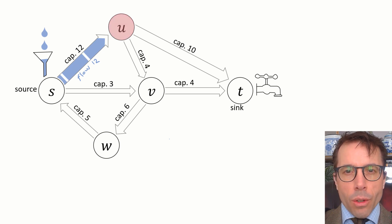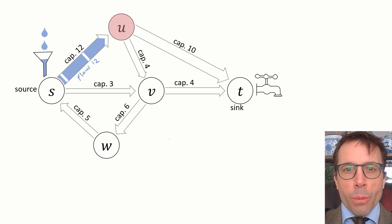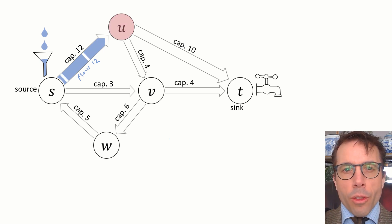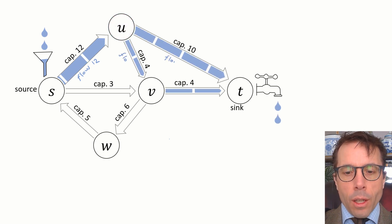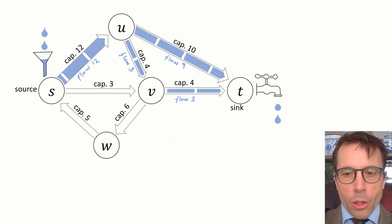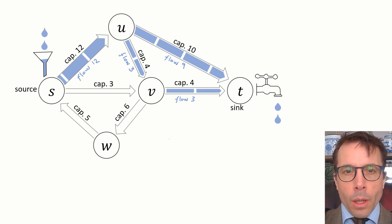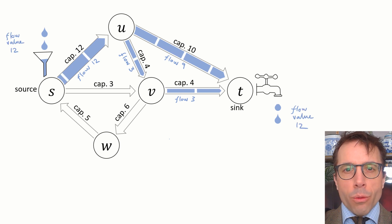Where shall we send it to? We have a choice about how to split this flow between the two edges going out of U. Let's say, for the sake of argument, we send 3 units towards V and then onto T, and we send the remaining 9 units on the direct U to T pipe. So we're sending a total flow of 12 litres per second.